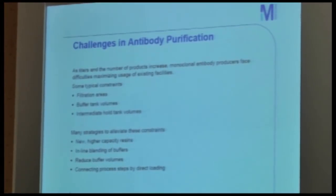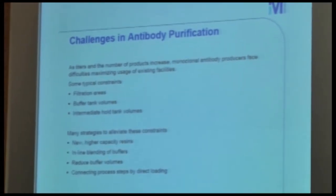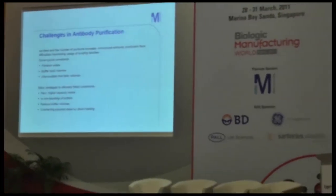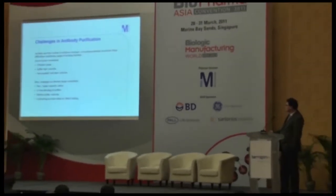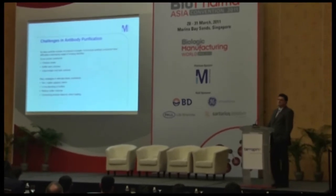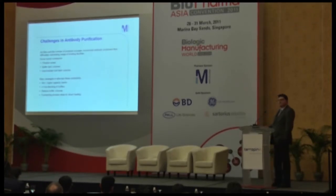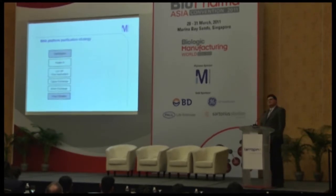Such products could be new, higher-capacity resins, opportunities for in-line blending of buffers for the reduction of buffer volumes by using the right process setup and the right products for manufacture. And last but not least, we would suggest connecting process steps in a monoclonal antibody process directly without the use of intermediate hold tanks, to ultimately be able to reduce the footprint of that unit operation.